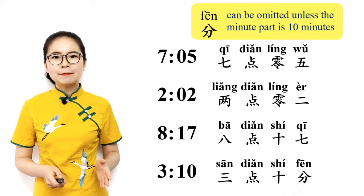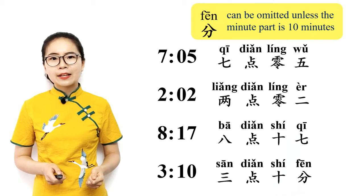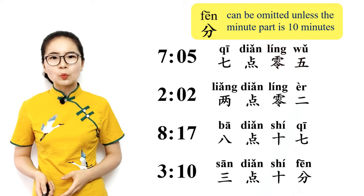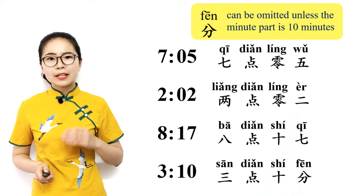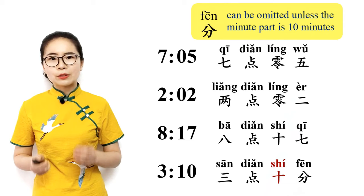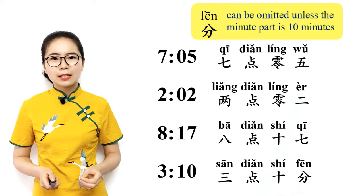In case you are wondering why: whenever we tell the time in Chinese, we say at least two-character numbers for the minutes. If the number of minutes is less than 10, we add 零 to make it two numbers, such as 零五 or 零二. If the number is greater than 10, we also say at least two-character numbers, such as 十七. The number 10, 十, is the only case where you say just a one-character number. If you stop at 十, it feels incomplete because people are waiting to hear another number. To make it sound complete, you have to say 分.